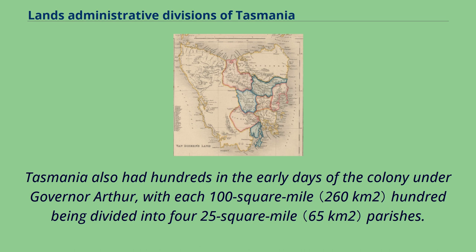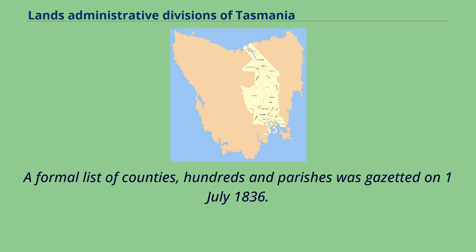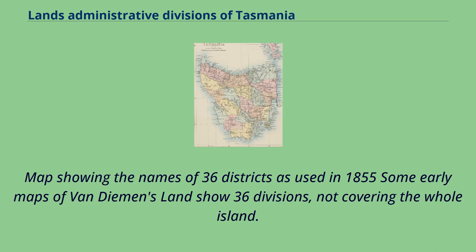Tasmania also had hundreds in the early days of the colony under Governor Arthur, with each 100-square-mile hundred being divided into four 25-square-mile parishes. A formal list of counties, hundreds, and parishes was gazetted on July 1, 1836.